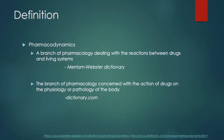Just to ensure everybody is on the same page, pharmacodynamics is a branch of pharmacology dealing with the reactions between drugs and living systems. What we tell pharmacy students is that pharmacodynamics is what the drug does to the body, whereas pharmacokinetics is what the body does to the drug — how it processes and eliminates it.